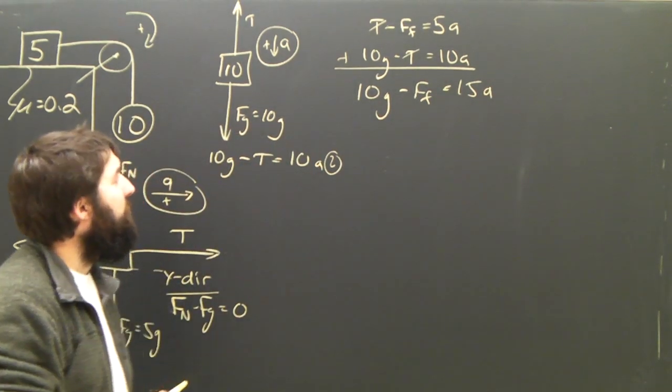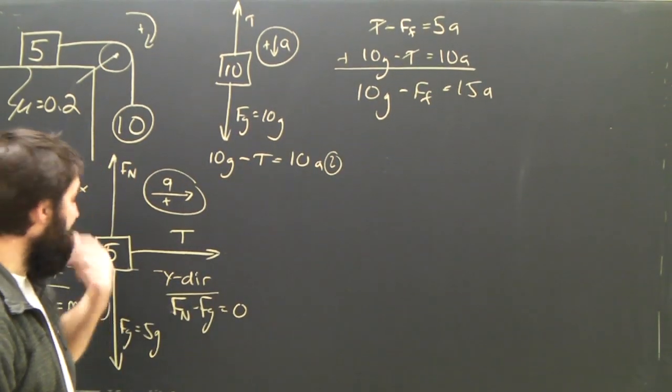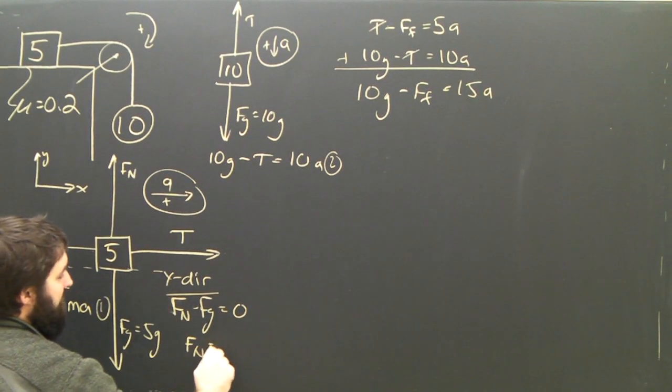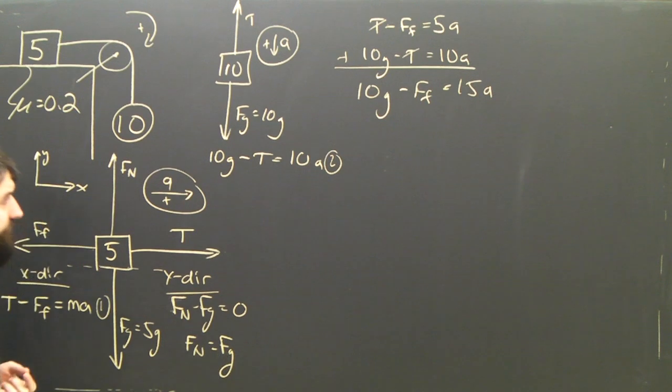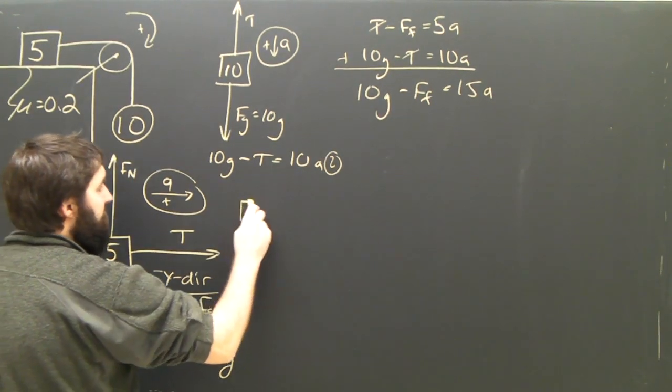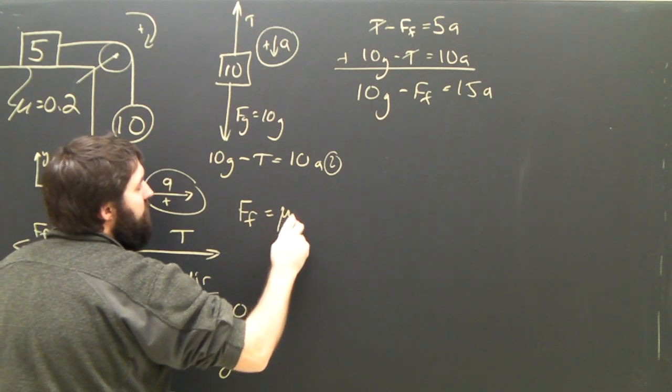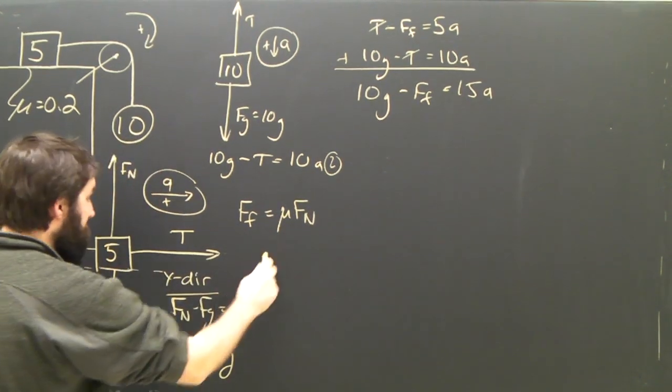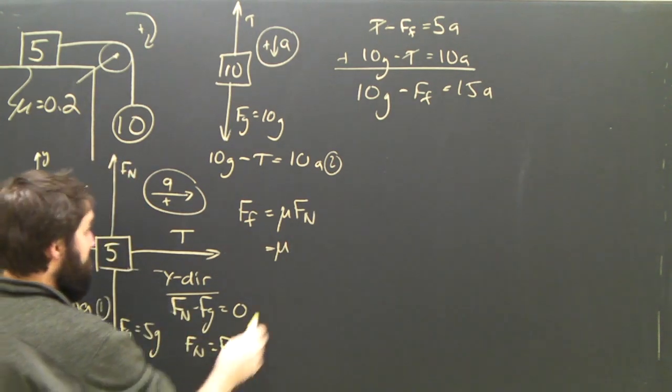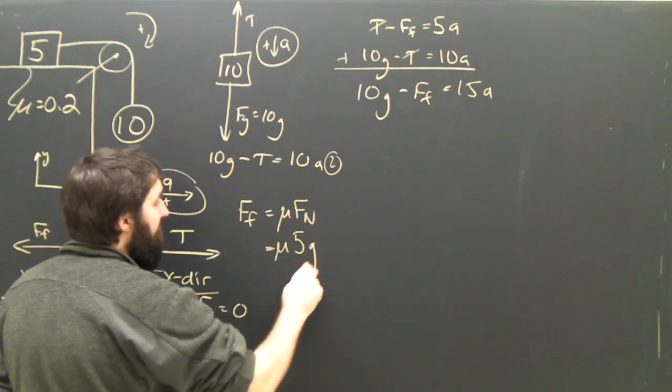Before I can go any further, I've got to figure out what this force of friction is. But that's not so hard. I know from my y equation here that Fn must equal Fg. And I know because my teacher taught me that the force of friction in general is equal to mu Fn. So in this case, Fn is mu times Fn, which is equal to 5g. It's mu 5g.